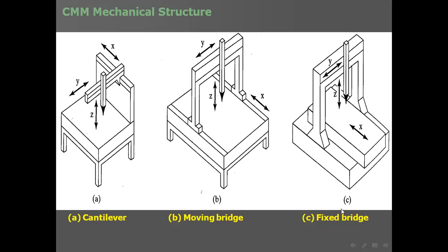The third configuration is the fixed bridge type — the bridge is fixed and the work table moves to provide the X motion, while Y and Z are similar to the previous configuration.